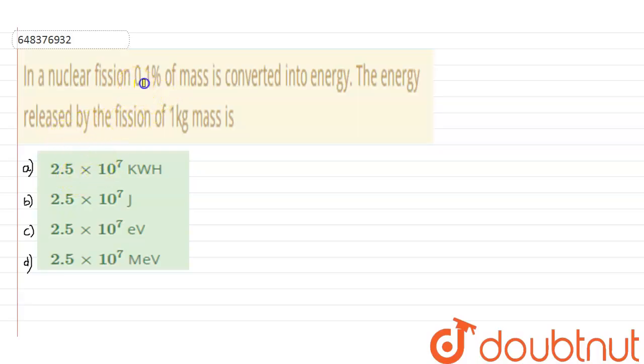So the question is: in a nuclear fusion, 0.1 percent of mass is converted into energy. The energy released by fusion of 1 kg of mass is—the options are A, B, C, and D.